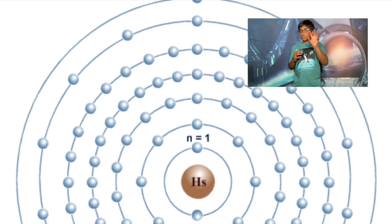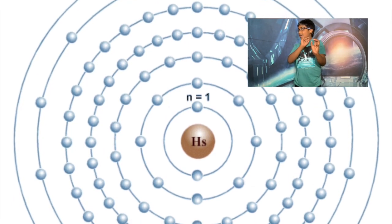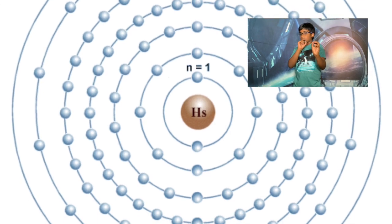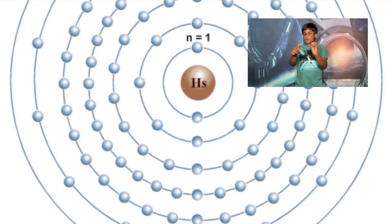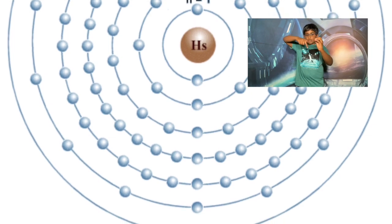What's a shell? Well, it's not those ones that you find at the beach. Think of the earth as the nucleus and the moon as the electron. It circles around the earth like an electron would do to the nucleus.